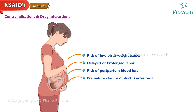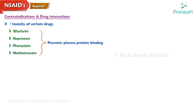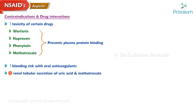In pregnant patients, aspirin is associated with risk of low birth weight babies, delayed or prolonged labor, risk of postpartum blood loss, and premature closure of the ductus arteriosus. It may increase the toxicity of drugs like warfarin, naproxen, phenytoin, and methotrexate by preventing plasma protein binding. Risk of bleeding increases when used with oral anticoagulants.